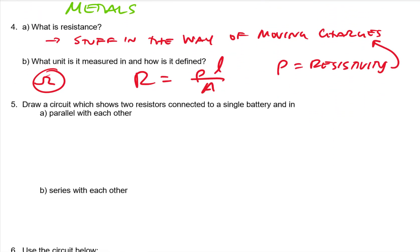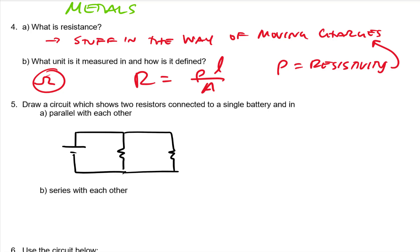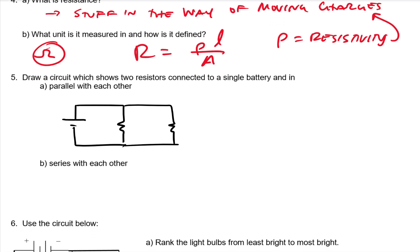Draw a circuit showing two resistors connected to a single battery in parallel with each other. In parallel, we have one path for charges to flow and a second path for charges to flow. In series, we have a battery with one resistor right after the other.